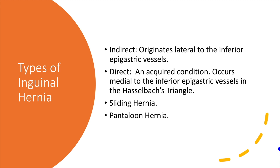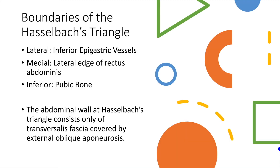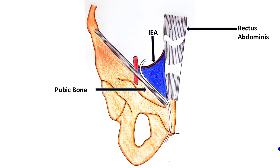Direct hernia occurs in the area known as Hesselbach's triangle. The three sides of Hesselbach's triangle are the inferior epigastric vessels laterally, the lateral edge of rectus abdominis medially, and the pubic bone inferiorly. Hesselbach's triangle is weak because the abdominal wall at that location consists only of transversalis fascia covered by the external oblique aponeurosis. This diagram illustrates the boundaries of Hesselbach's triangle.